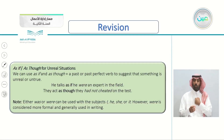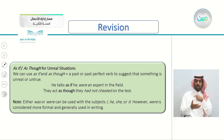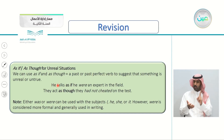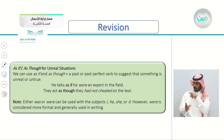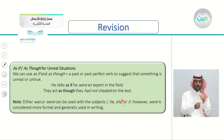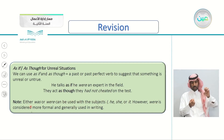We also learned about 'as if' and 'as though.' For unreal situations, when we talk about something that's unreal or untrue, we can use 'as if' and 'as though' plus a past or past perfect verb to suggest that something is unreal or untrue. For example, 'He talks as if he were an expert.' Is he an expert? No, of course. And remember, we said 'were' here. Why? Because either 'was' or 'were' can be used with the subjects I, he, she, or it.